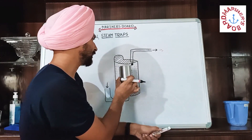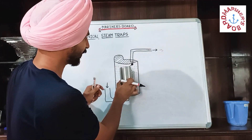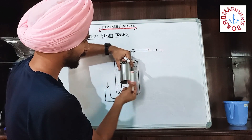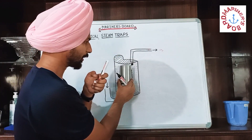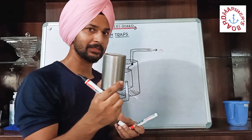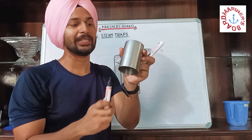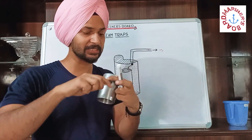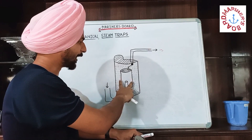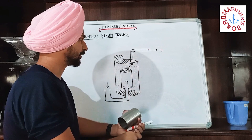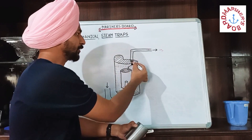In this type of steam trap, priming is required first. The space around the inverted bucket is always filled with water. Since air is inside the inverted bucket and it is empty, the buoyancy of the bucket is greater. Because of this greater buoyancy, the valve or ball moves upward and shuts the outlet, so nothing can go out.